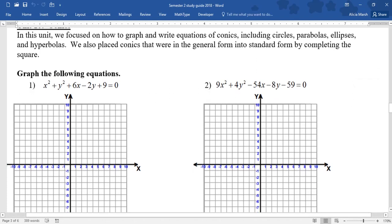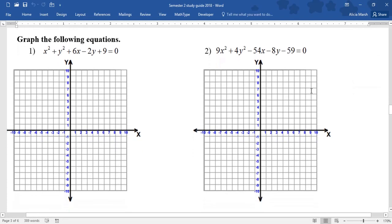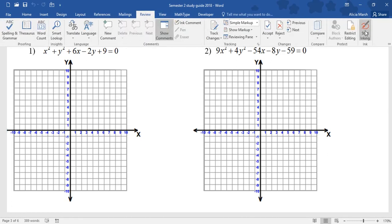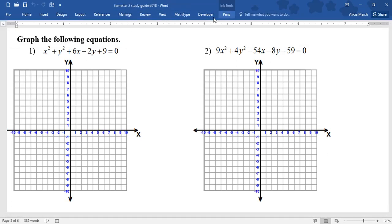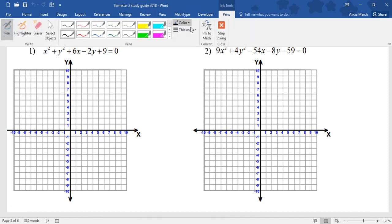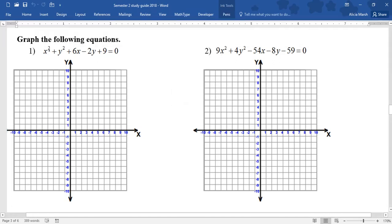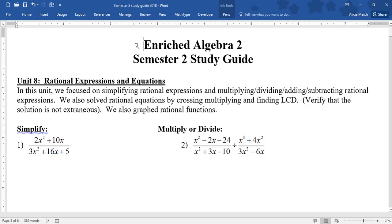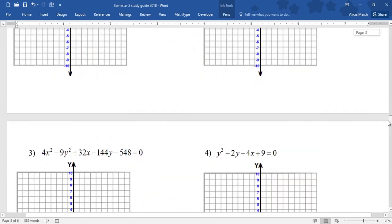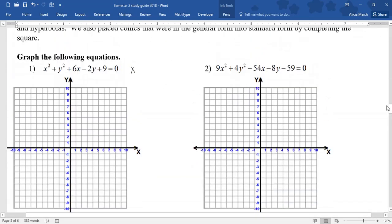So on every single one of these, what you need to do is basically complete the square and then graph the conic. So this one in particular, I first need to get the girls with the girls and the boys with the boys, right? So I'm going to put the x's together. I'm going to get the x squared plus 6x, and then I'm going to get the y's by each other, and then I'm going to kick that 9 to the other side.